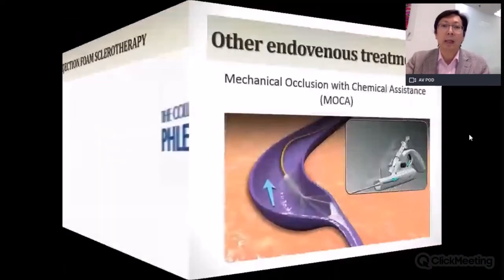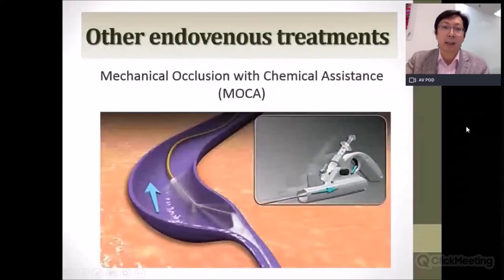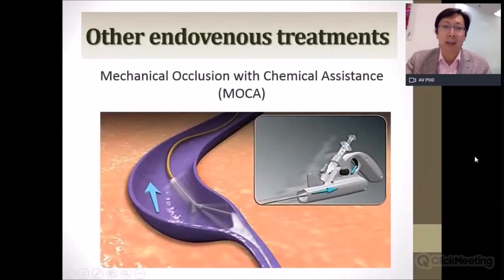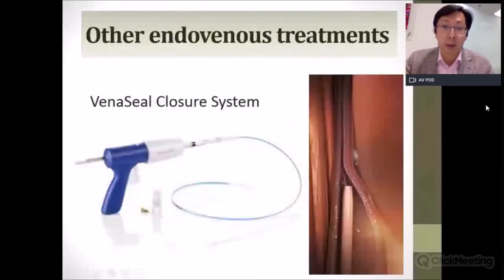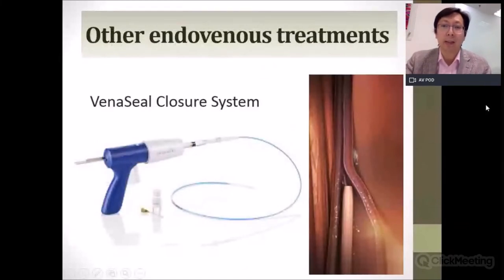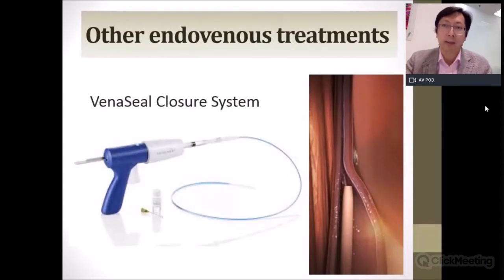Other newer methods include mechanical occlusion with chemical resistance, called MOCA, or using a glue to seal up the vein. These are newer techniques and we do not yet have long-term results.